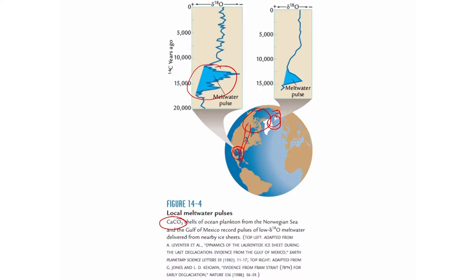Those pulses are important because they indicate two things: one, that there was a southward path of the meltwater flux, and two, there was also an eastward path of the meltwater flux. There is also a path in another direction, as we will see in a minute.